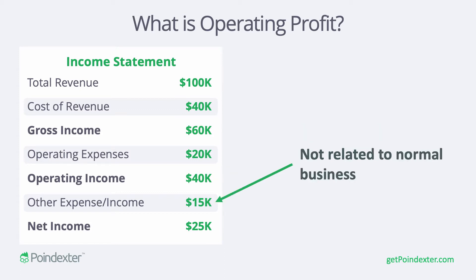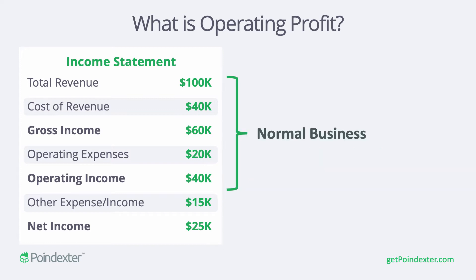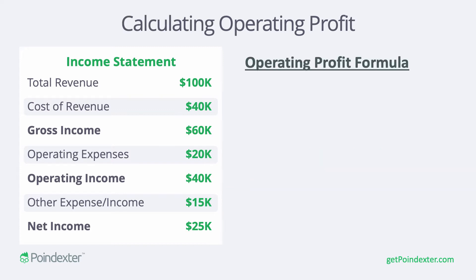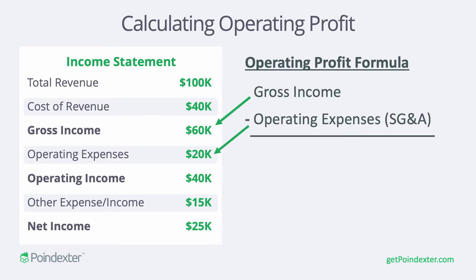You'll notice below a section called other expenses and income — these don't have anything to do with normal business. Everything related to normal business operations is contained above operating income. We can calculate operating profit by grabbing gross income, subtracting our operating expenses, and we are left with our operating profit.